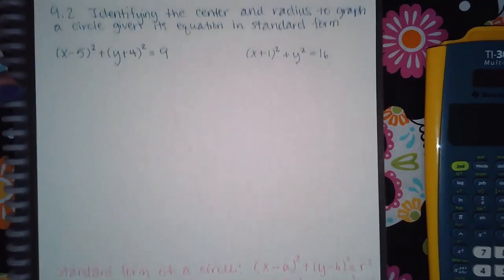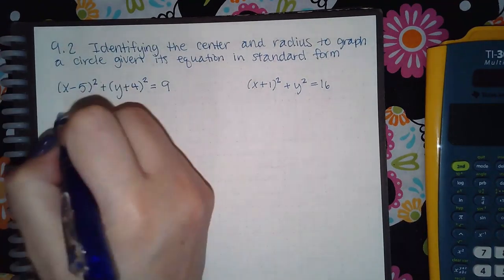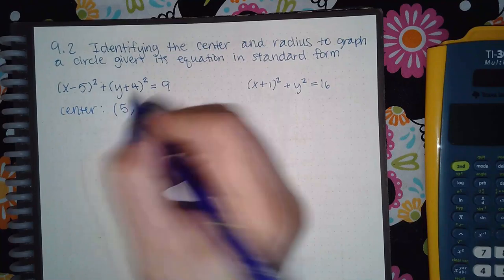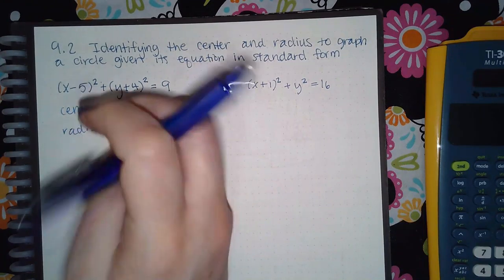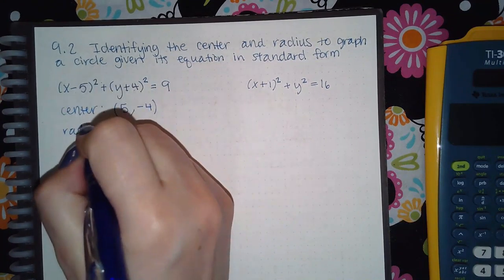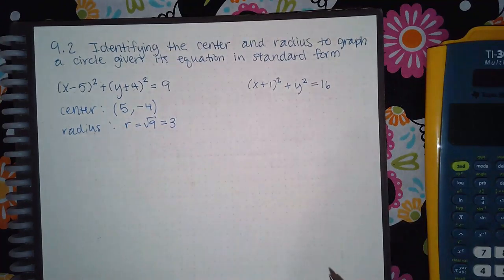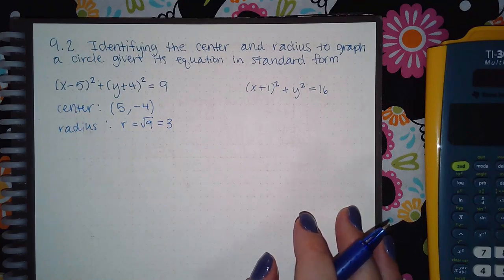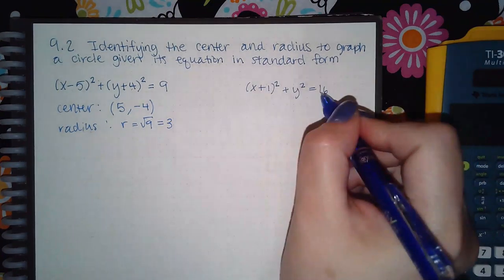For this problem, the center is going to be the opposite of minus 5, which is positive 5, and the opposite of plus 4, which is negative 4. The radius is going to be the square root of 9, which is 3. You don't need to put plus or minus 3, because having a radius of negative 3 doesn't make sense — a negative radius would mean the circle is imploded upon itself, so negative radii do not make sense.